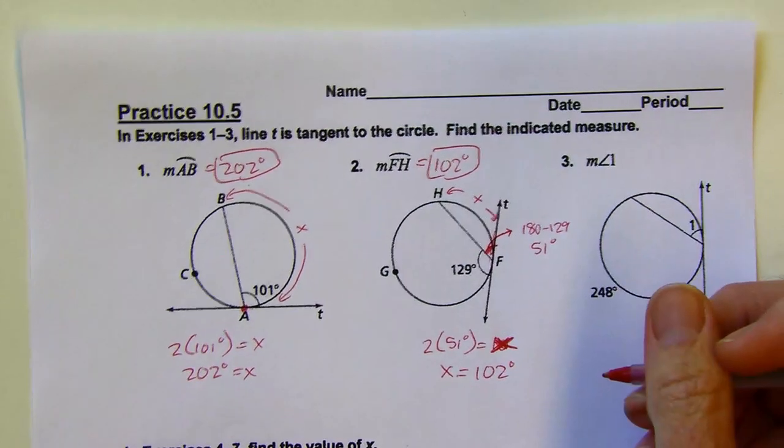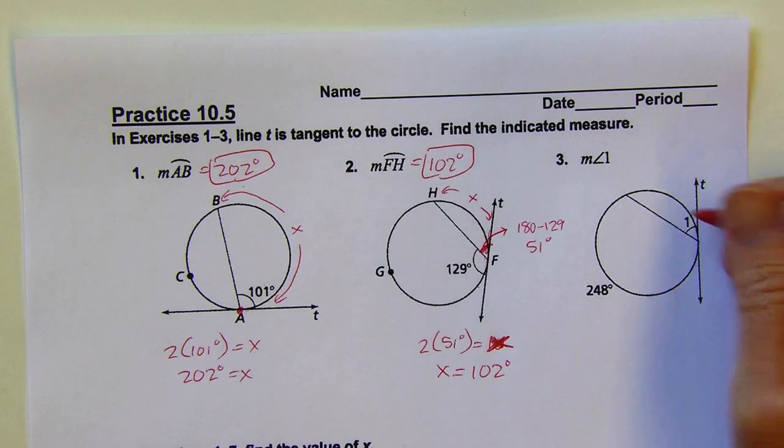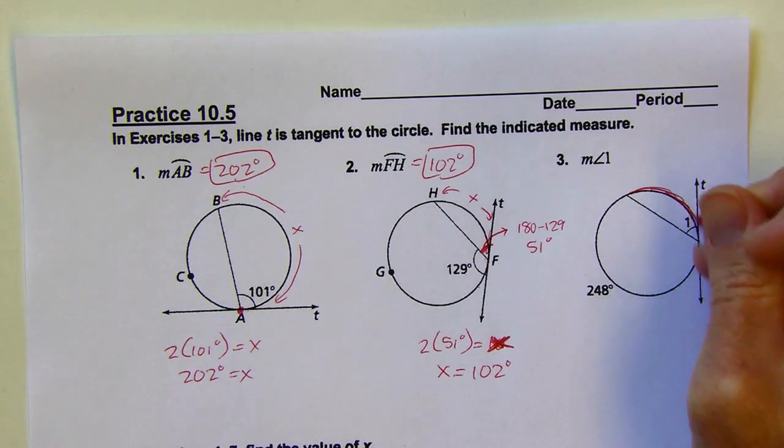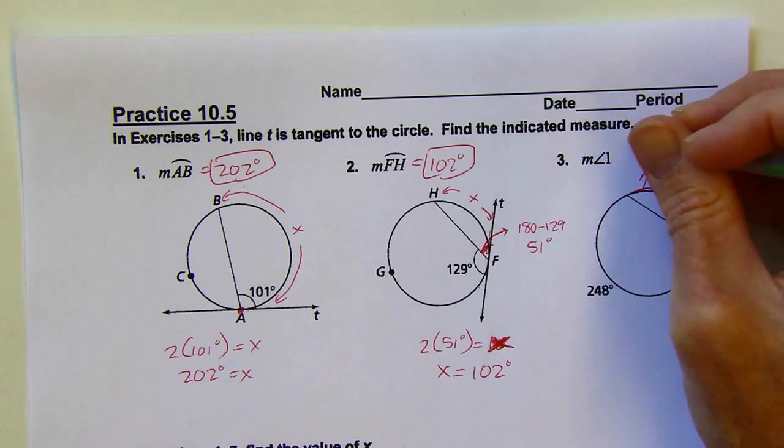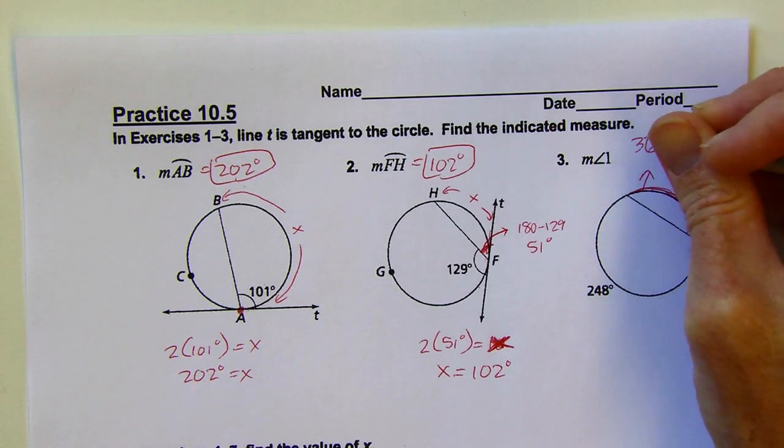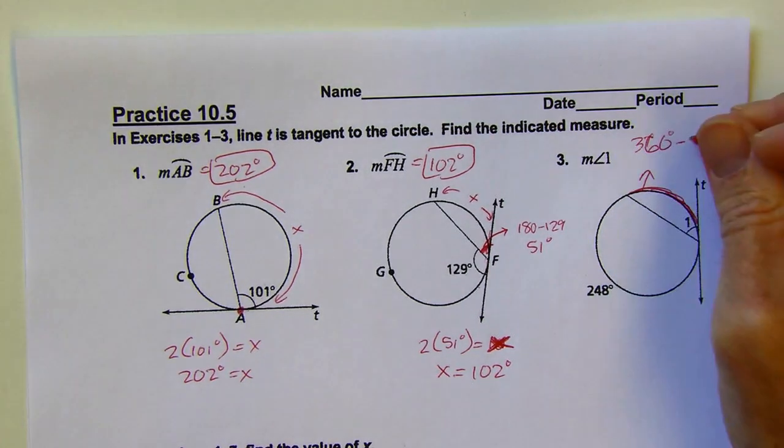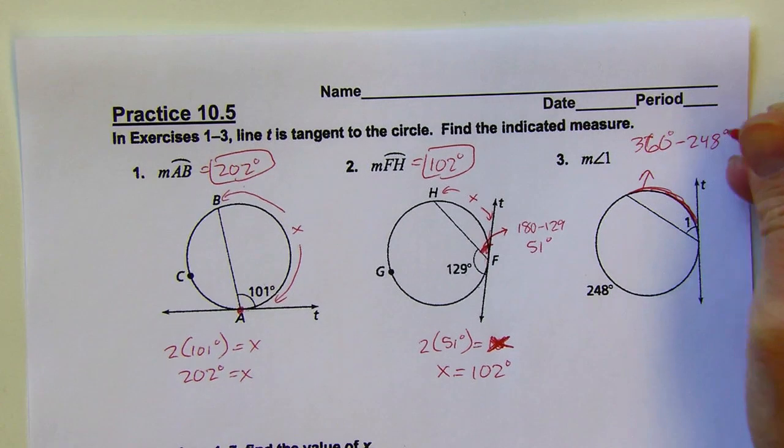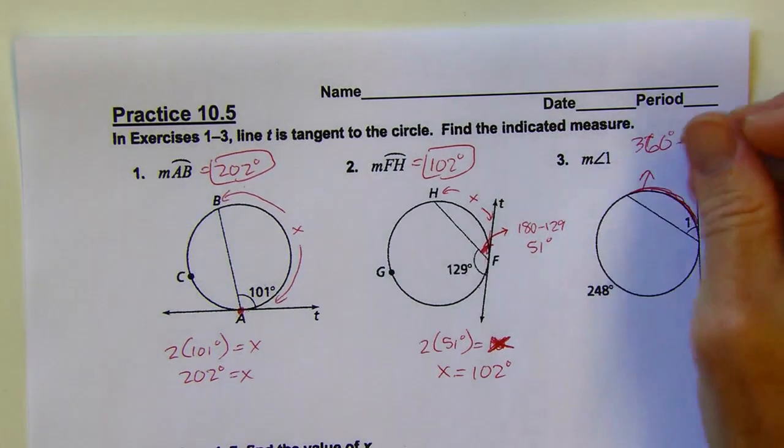Next one. I'm supposed to find the measure of this angle. First, I'm going to find the measure of the arc that it intercepts. I'm just thinking this is going to be the whole circle with the 248 part cut out. So I've got 360 minus 248, that gives me 112.